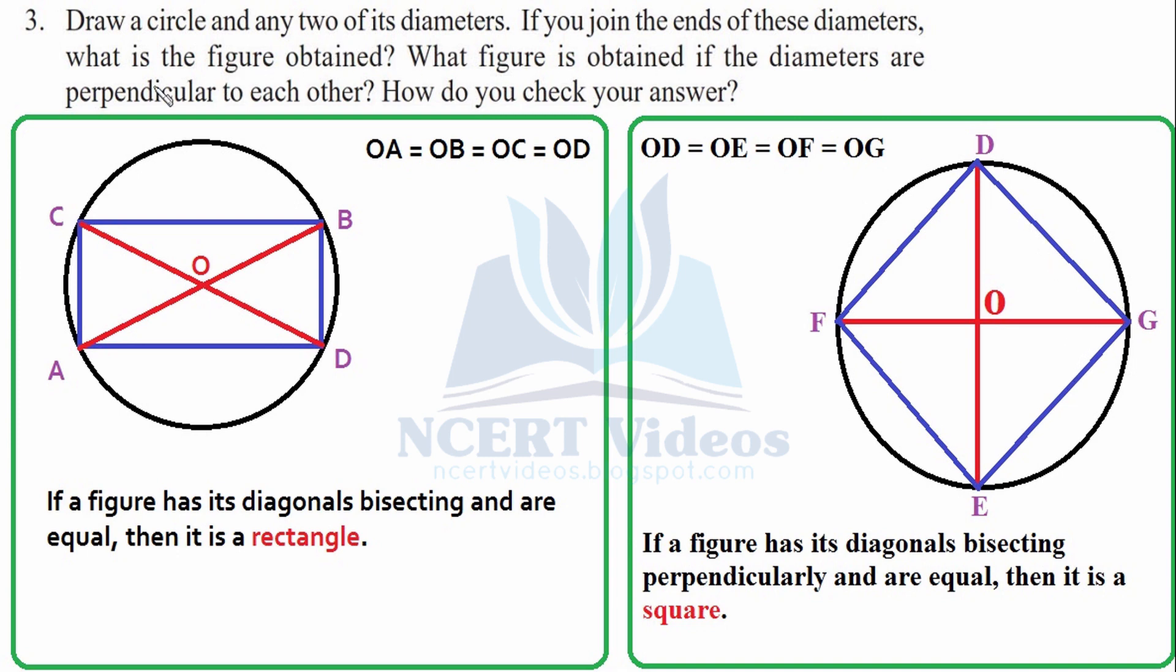Now what figure is obtained if the diameters are perpendicular to each other? Let's discuss first if they are not perpendicular. This is shown in the first figure. In the another figure we have made is 90 degrees. Here, there is no 90 degrees or the diameters are not perpendicular to each other. You can see here that AO and OB are equal. And OC and OD are equal because these are radius of the circle. When we have a figure whose diagonals are bisecting and they are equal, then the figure is said to be a rectangle.